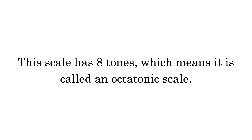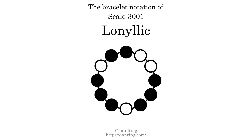This scale has 8 tones, which means it is called an octatonic scale. This is a bracelet notation diagram of scale 3001. The shaded circles represent tones that appear in the scale, and they are read clockwise, starting at the top.